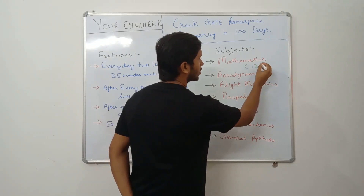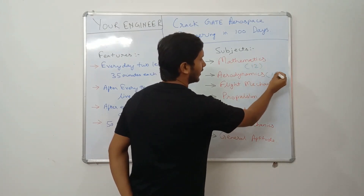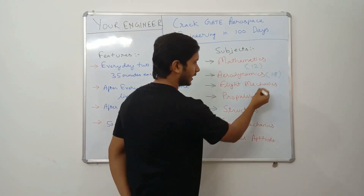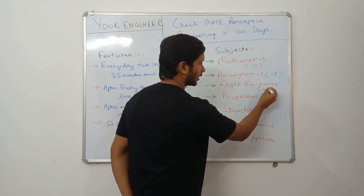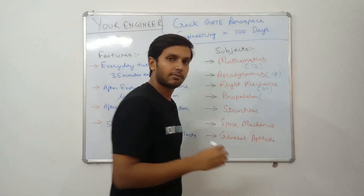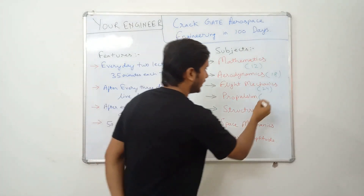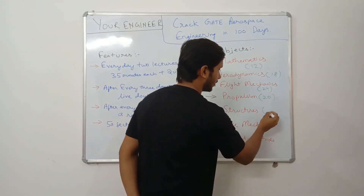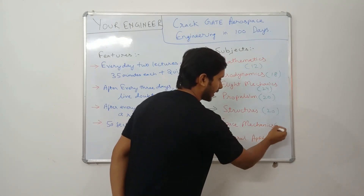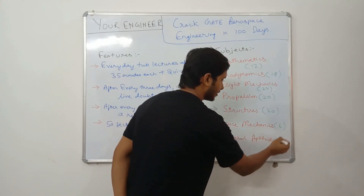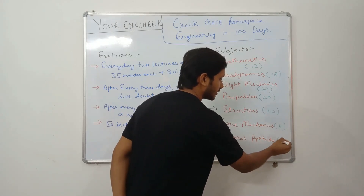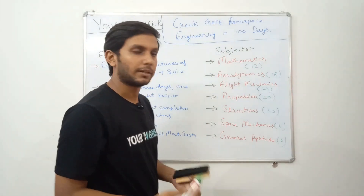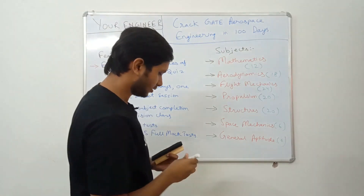Let's see how many lectures we will have to complete. For mathematics we will have 12 lectures, for aerodynamics 18 lectures, for flight mechanics 24 lectures, for propulsion 20 lectures, for structures 20 lectures, for space mechanics 6 lectures, and for general aptitude 6 lectures. These are all the lectures we will complete for GATE Aerospace Engineering.